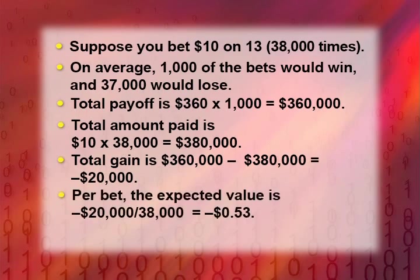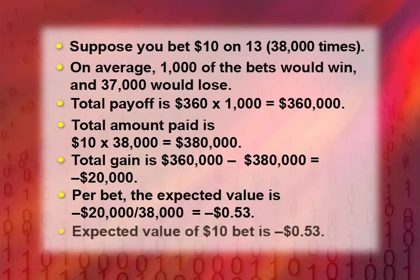So per bet, the expected value is the $20,000 loss divided by the 38,000 bets we made — in other words, the average over all bets. It's the average winning or losing. In this case, the average is negative 53 cents. On average, we expect to lose 53 cents for every $10 bet.